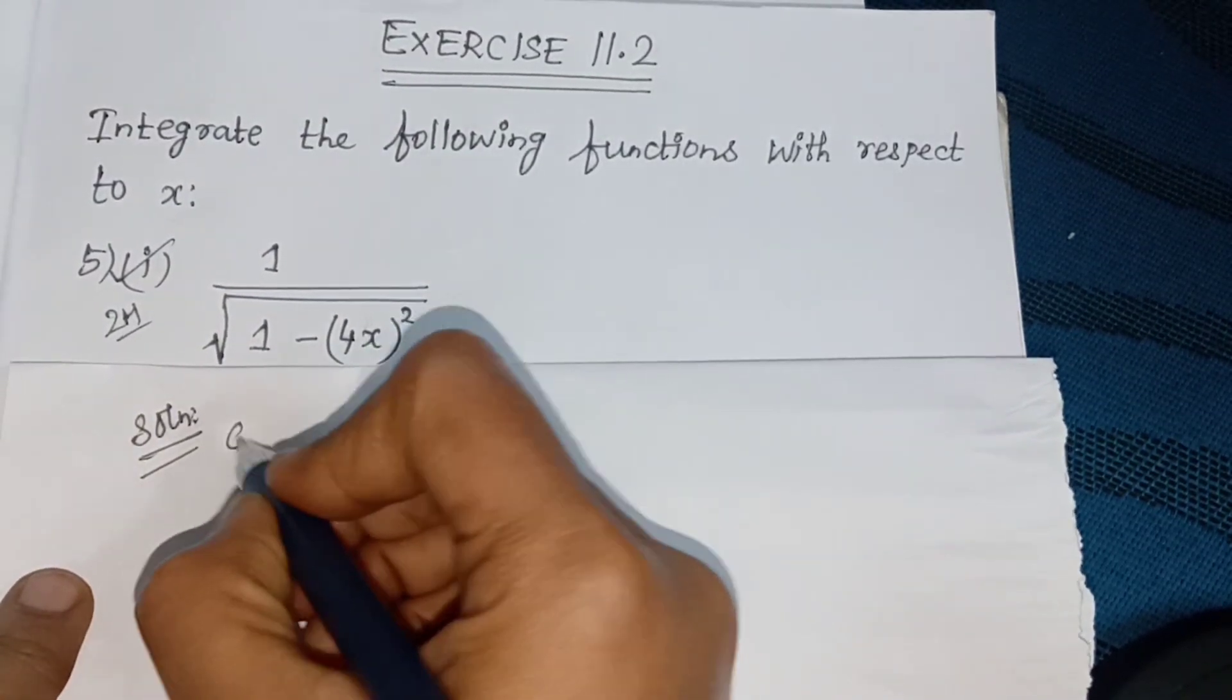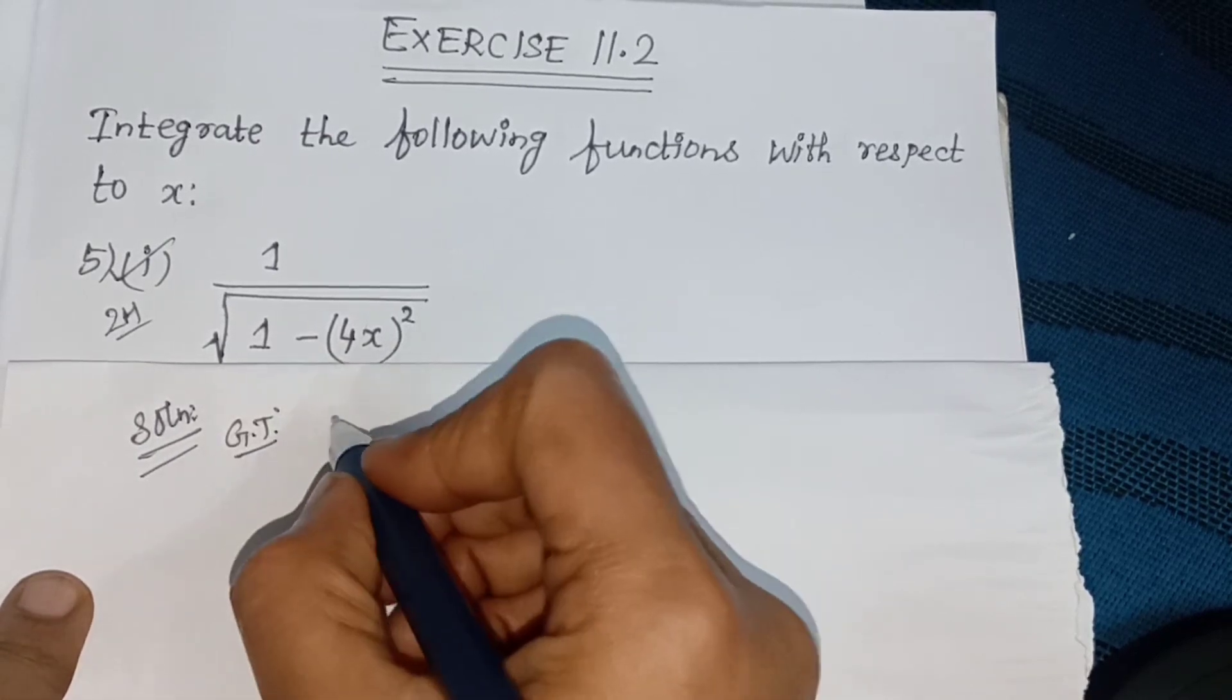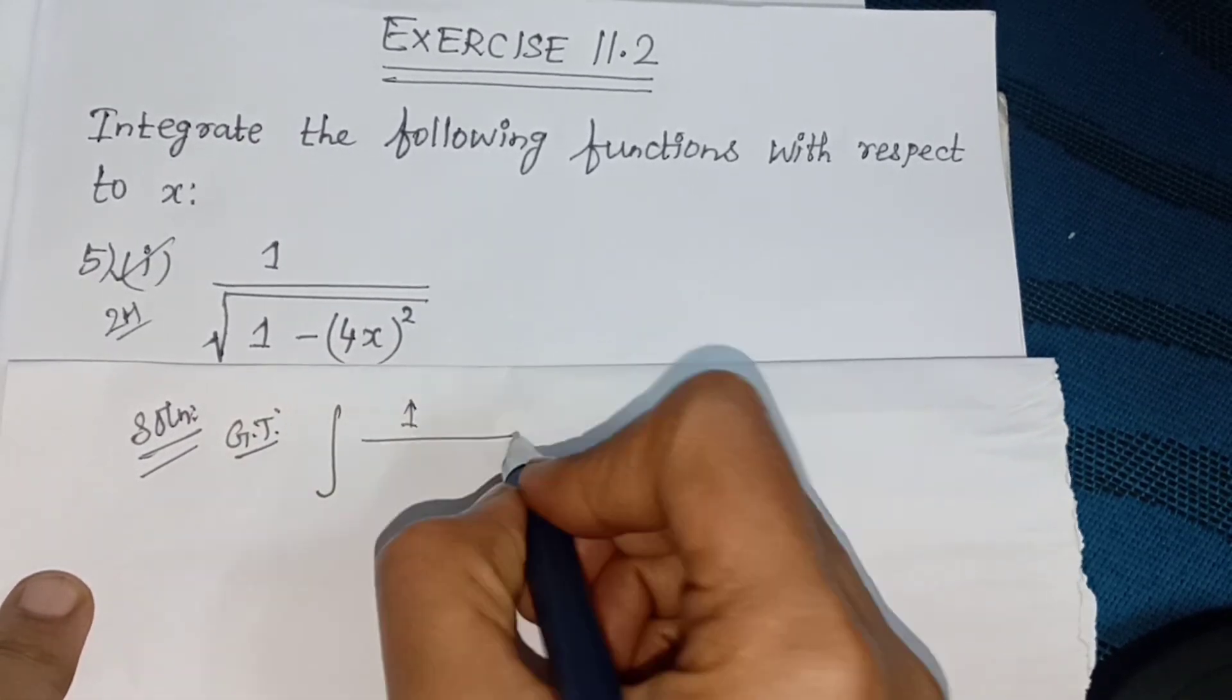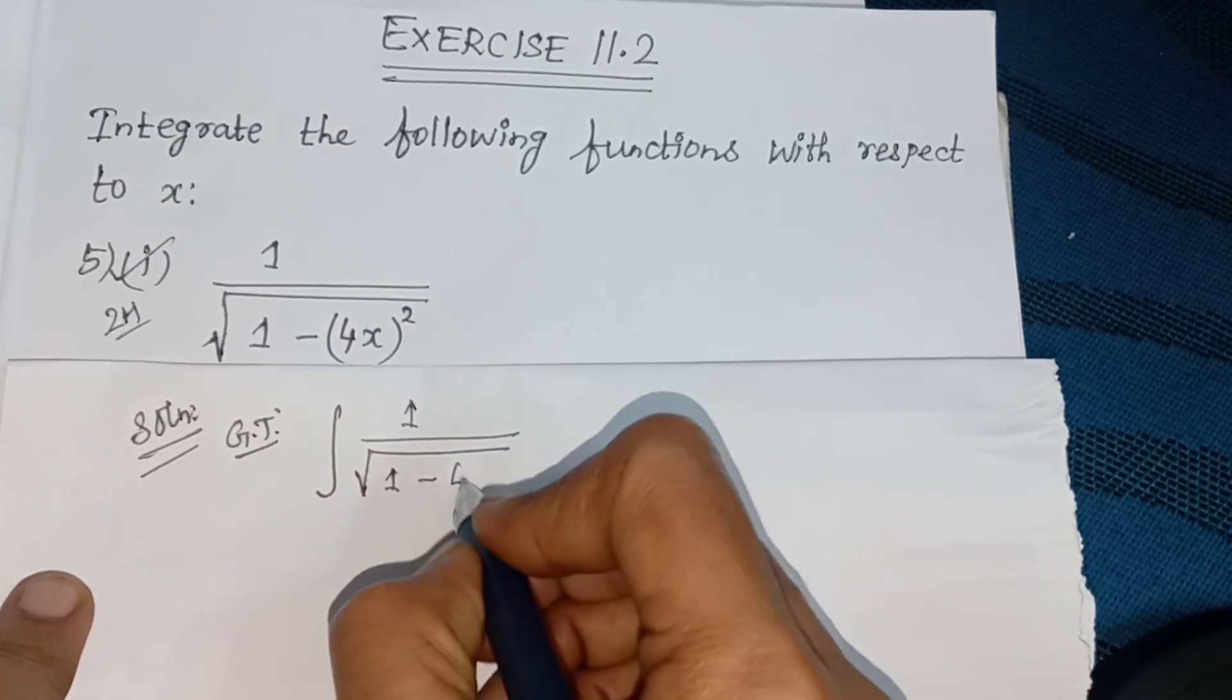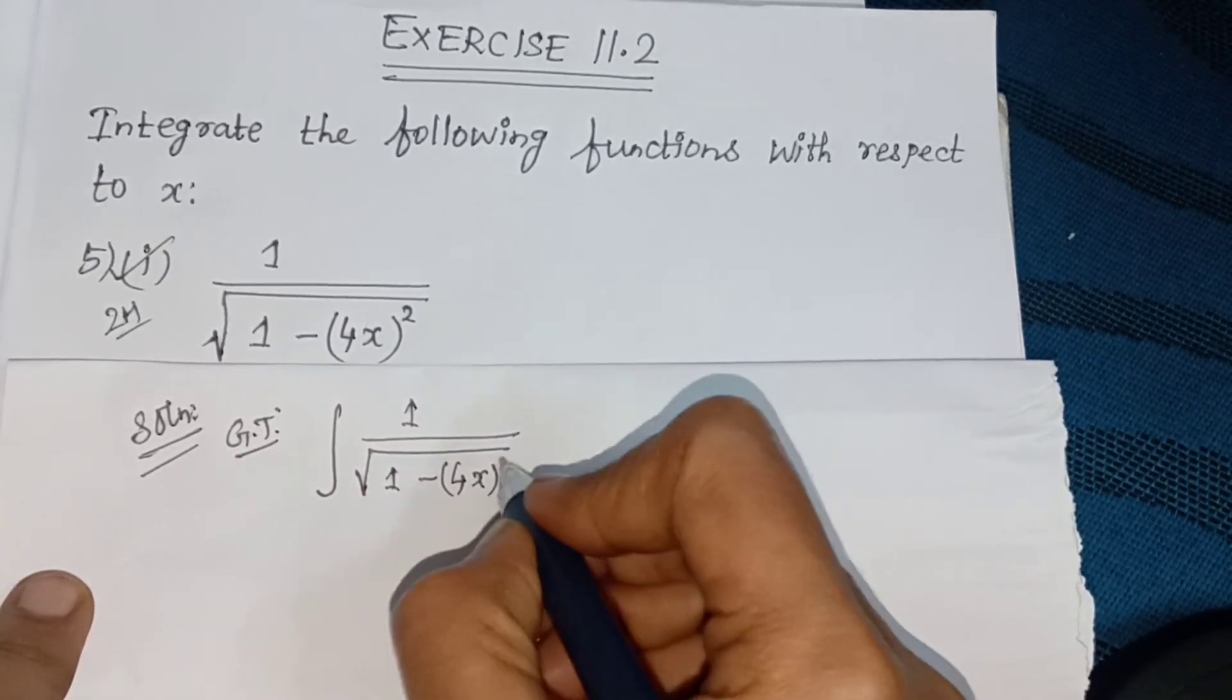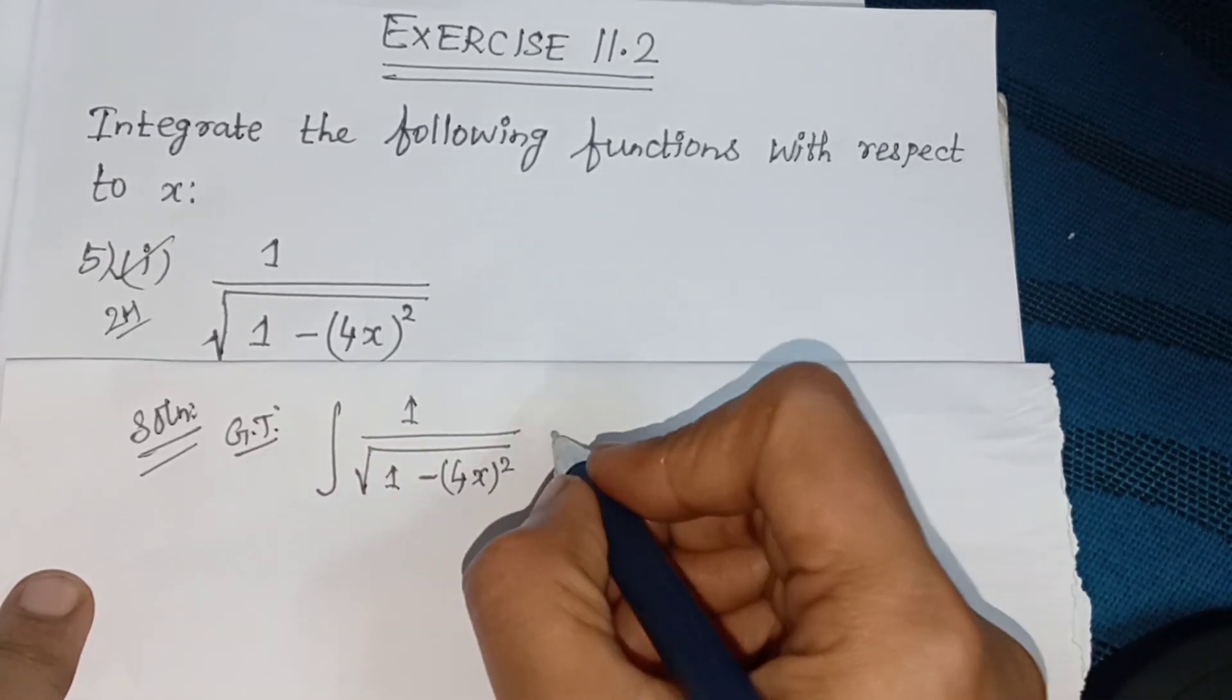Solution, given that: integral 1 divided by square root of 1 minus 4x whole square into dx.